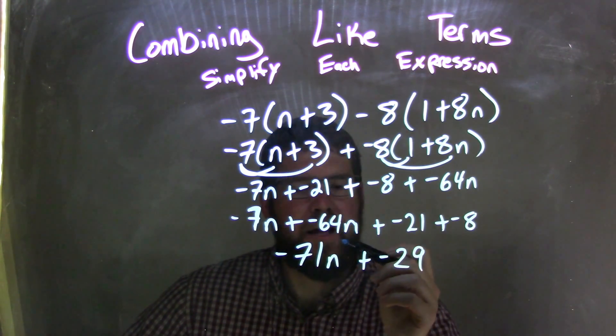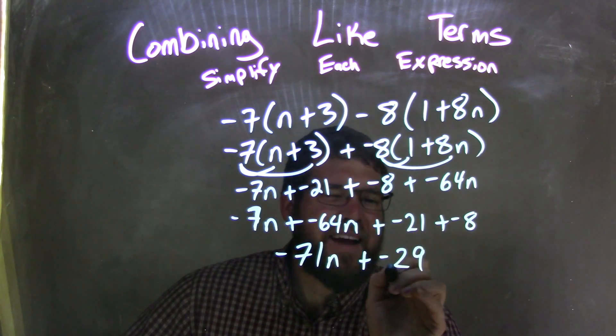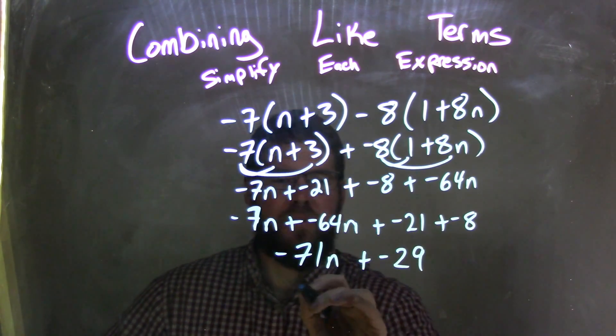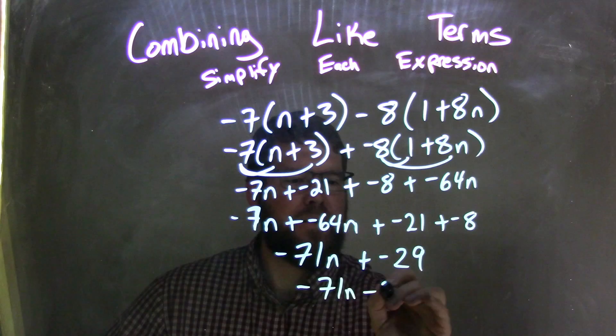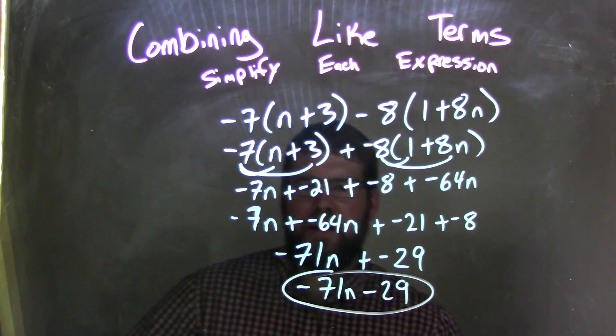Plus a negative can look cleaner as subtraction, so we have negative 71n minus 29, and that is our final answer.